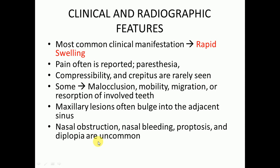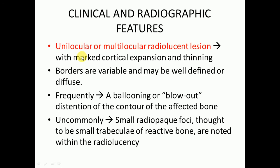Radiographic features show a unilocular or multilocular radiolucent lesion with marked cortical expansion and thinning. The borders are variable and may be well-defined or diffuse. Frequently there will be ballooning or blowout distension of the cortex of the affected bone. Uncommon locules can be small radiopaque foci thought to be small trabeculi of reactive bone noted within the radiolucency.